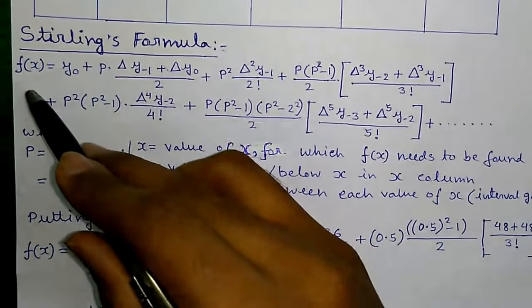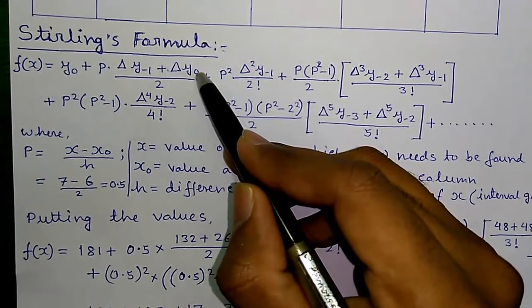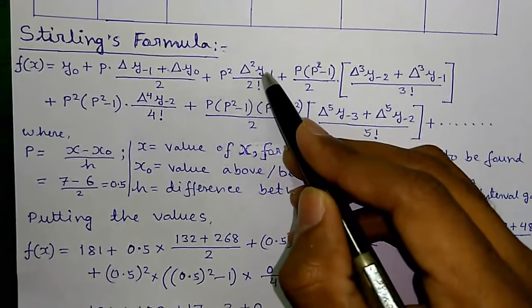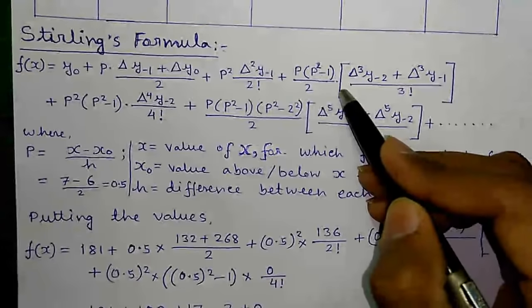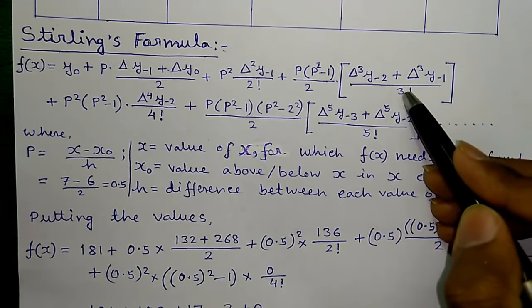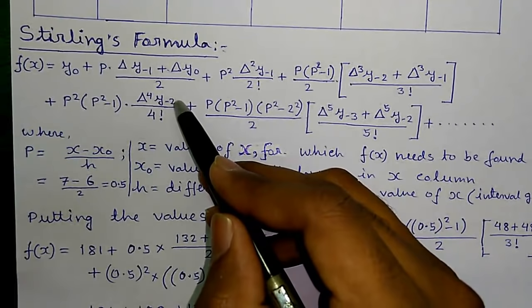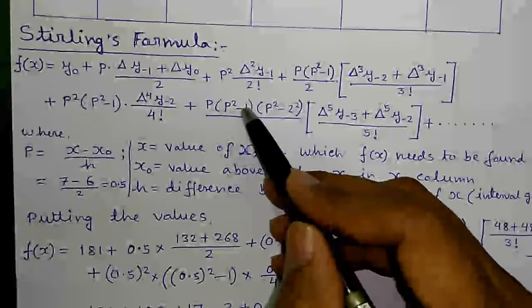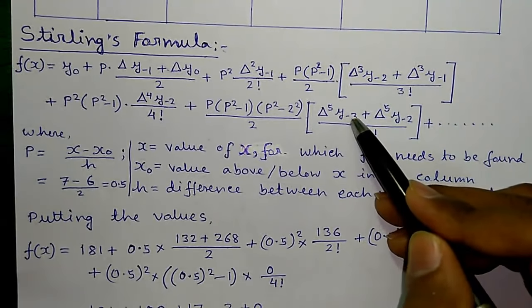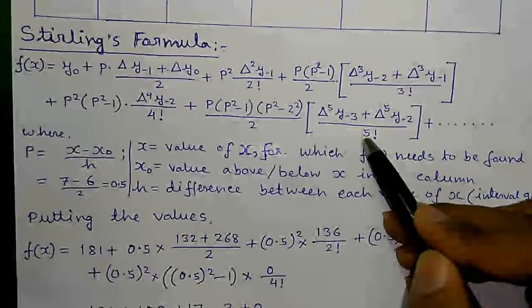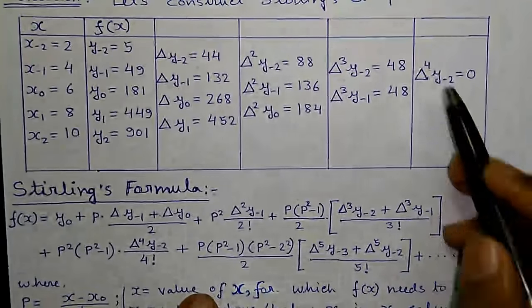Next, the Stirling's formula: f(x) = y₀ + p·(Δy₋₁ + Δy₀)/2 + p²·(Δ²y₋₁)/2! + p(p²−1)/2·(Δ³y₋₂ + Δ³y₋₁)/3! + p²(p²−1)·(Δ⁴y₋₂)/4! + p(p²−1)(p²−4)/2·(Δ⁵y₋₃ + Δ⁵y₋₂)/5! and so on. In our example we will take up to the Δ⁴ term, because Δ⁴ is the maximum term we have.